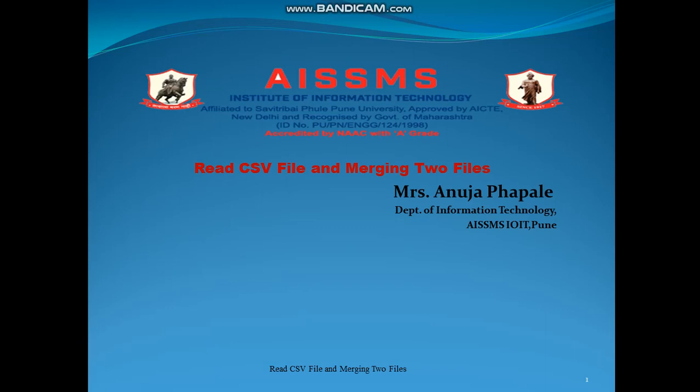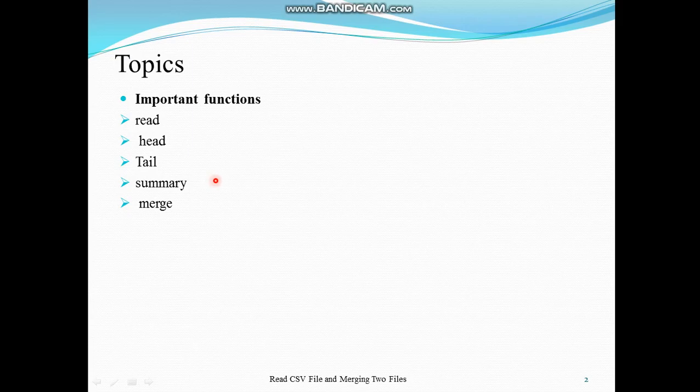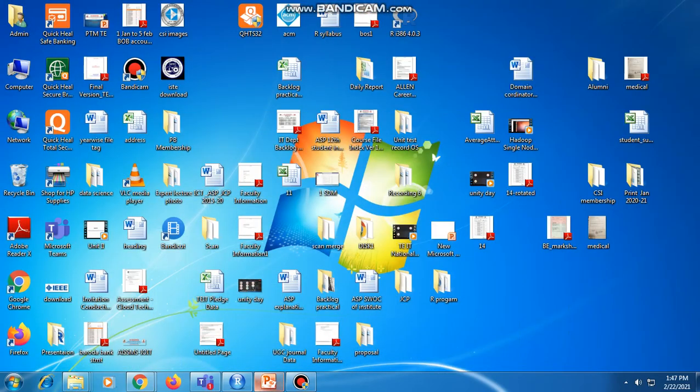In this video we will see how to read a CSV file using the read function and merge two CSV files. The important functions we are going to learn are: read function to read the CSV file, head function to read the header part, tail function for the tail part, summary function to get the summary of every column, and merge function to merge two files. We will see execution of these functions in R Studio.